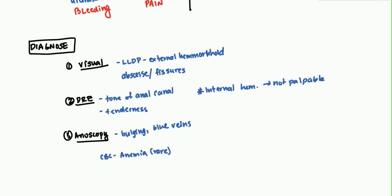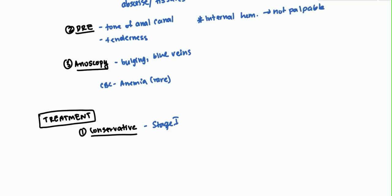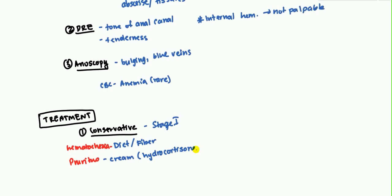Once diagnosed, we move on to treatment. The first line is conservative treatment, used for stage one and possibly stage two. The first step is diet and fiber — changing their diet and adding fiber supplements with exercise can help symptoms significantly and has been shown to decrease hematochezia, which means blood in the feces. For pruritus, hydrocortisone cream is very common, and sitz baths are also helpful to alleviate symptomatic issues.